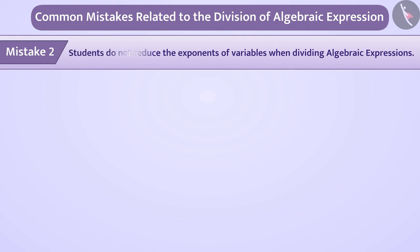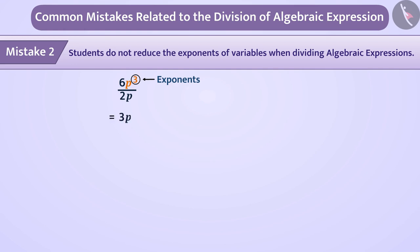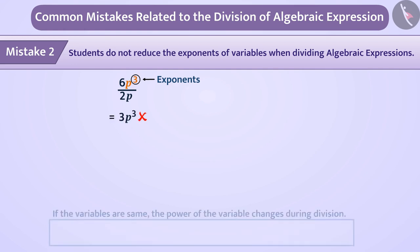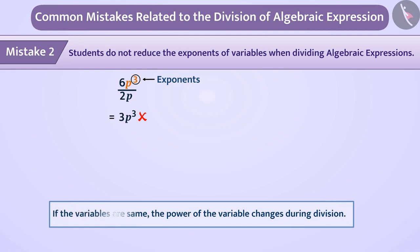Mistake two: students do not reduce the exponents of the variables when dividing algebraic expressions. If children are asked to simplify 6p cubed divided by 2p, some children ignore the exponents of the variables and write the variable and its power as such, giving them the wrong answer 3p cubed.